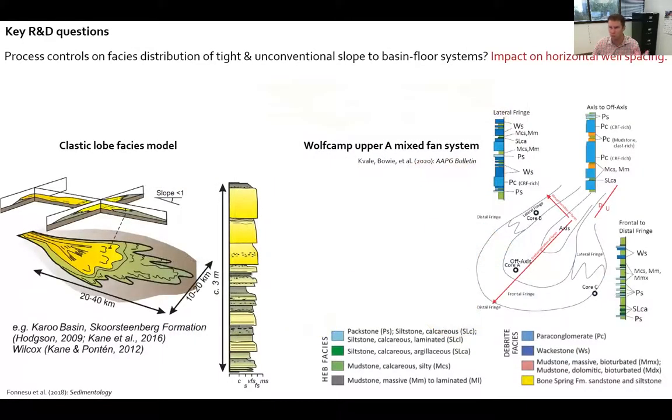That's an unconventional perspective of heterogeneity, but we're after questions in the Permian Basin that relate to more tight and unconventional slope and basin floor reservoirs. For example, we have two models here, one for a clastic lobe facies model or fan facies model in a conventional type of environment.